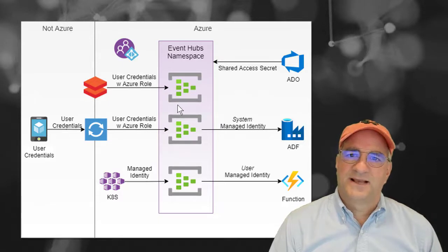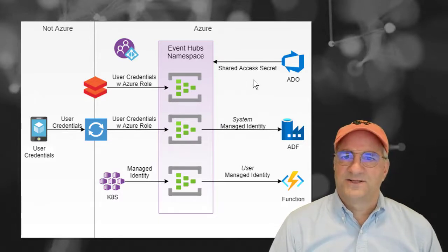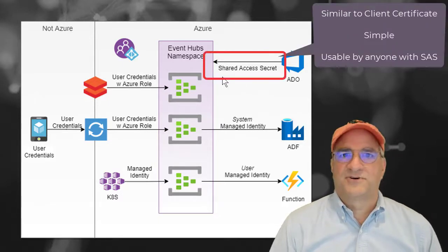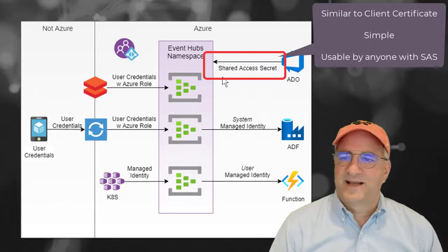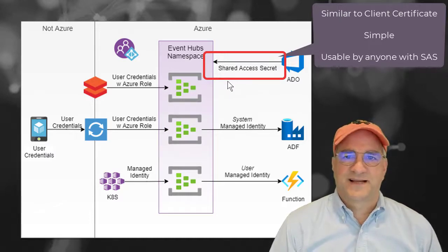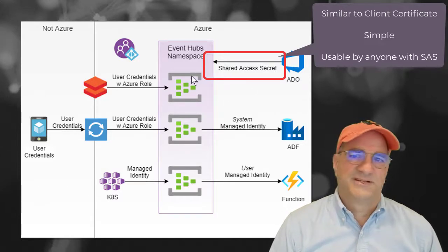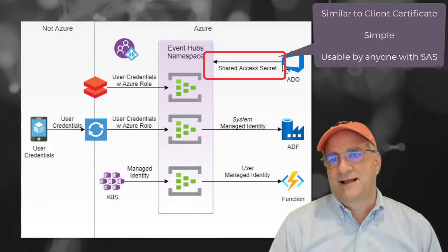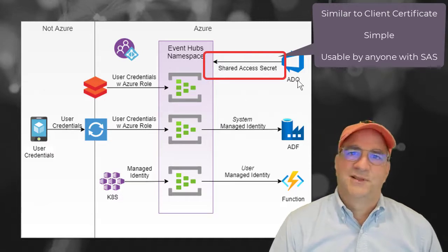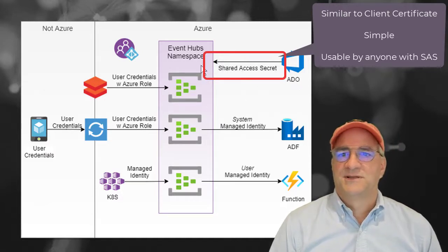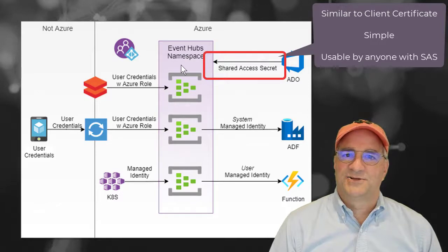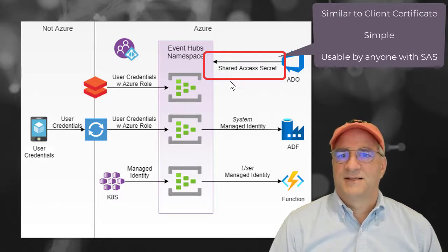Let's talk about shared access secret. This is probably the most primitive of all these. It's kind of like a client cert — basically a sign-in key. When requests are made, the request is signed with the shared access secret. If you have the secret, you can take the action. I set it up so that I had ADO pipeline builds, and the ADO builds were going to manage, create, and destroy event hubs on this namespace.